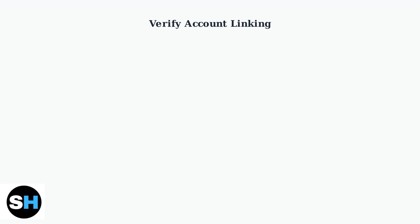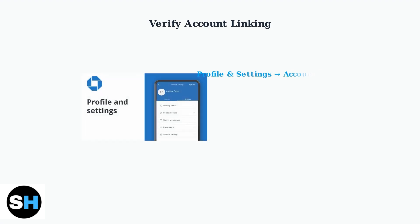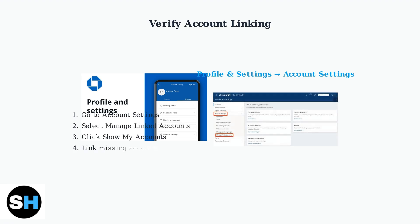Next, we need to verify that your credit card is properly linked to your Chase account — this is a common issue that prevents cards from appearing in the app. In the Chase app, navigate to Profile and Settings, where you can manage all your account connections. Once in Account Settings, look for Manage Linked Accounts, where you can see all your accounts and manually link any that aren't showing up properly.